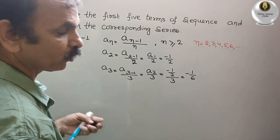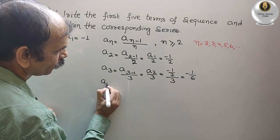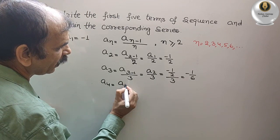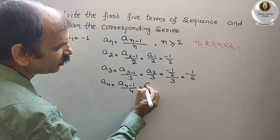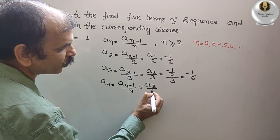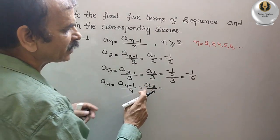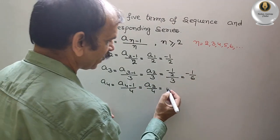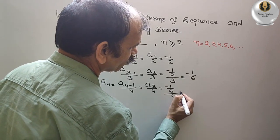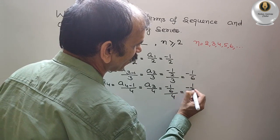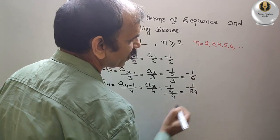Next comes your a4. a4, that is your a4 minus 1 by 4. That is equal to a3 by 4. So a3 is minus 1 by 6, by 4. So that is equal to minus 1 by 24.